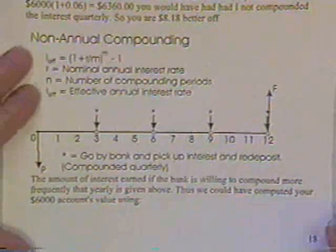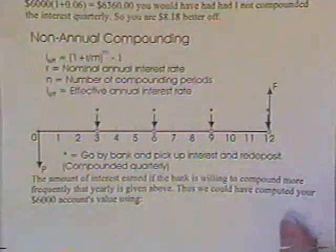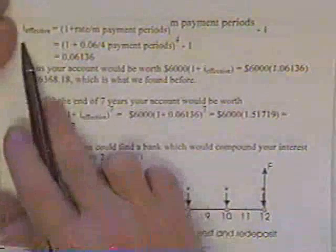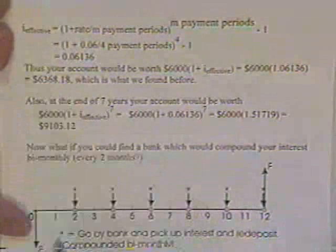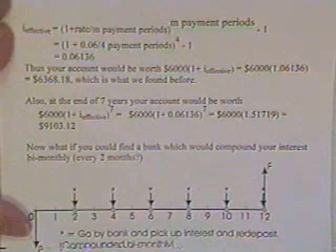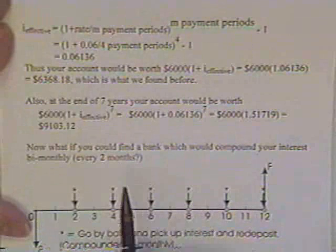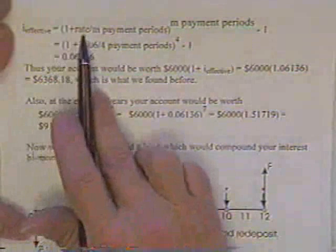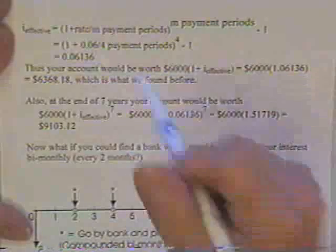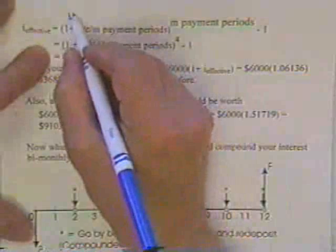We could also do the same thing with what we would call an effective rate. The effective rate is listed in the manual. The effective rate is one plus the plain old rate, which might be better called the nominal rate.